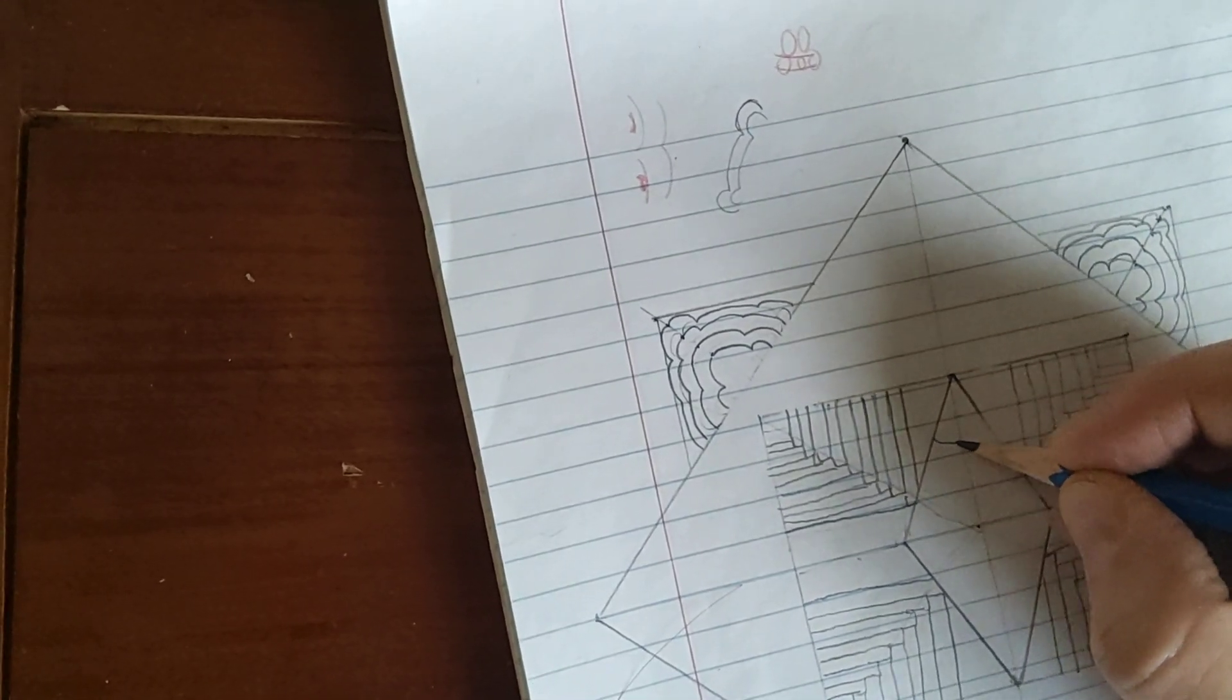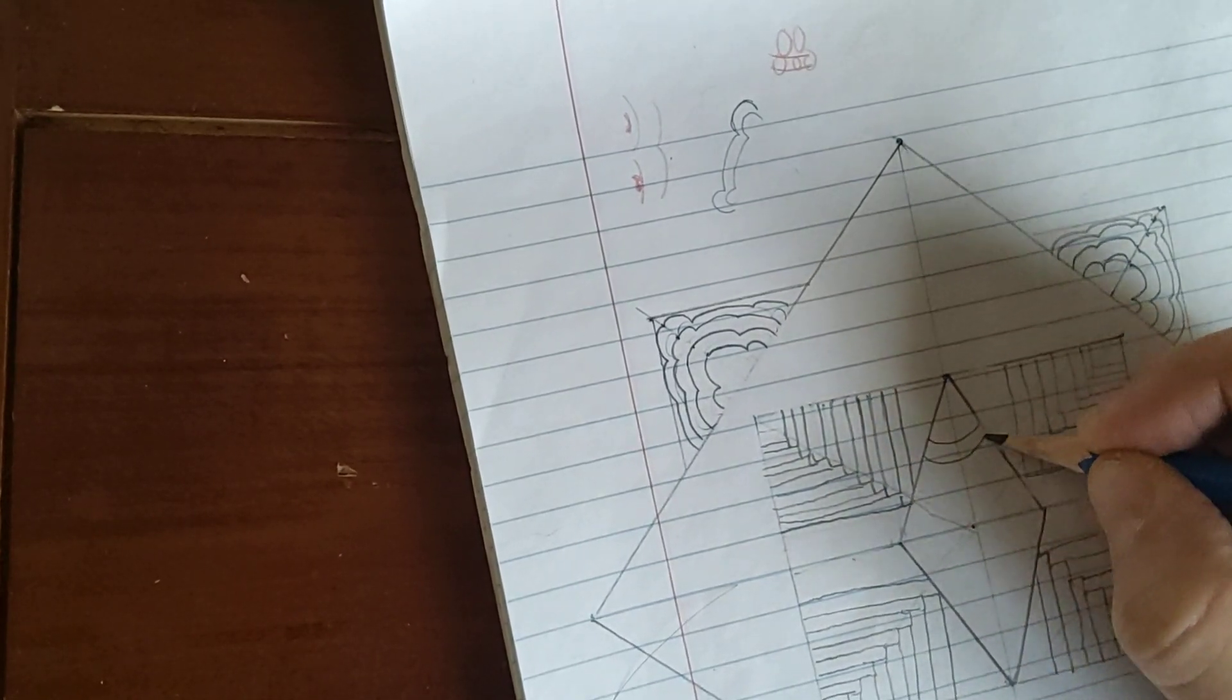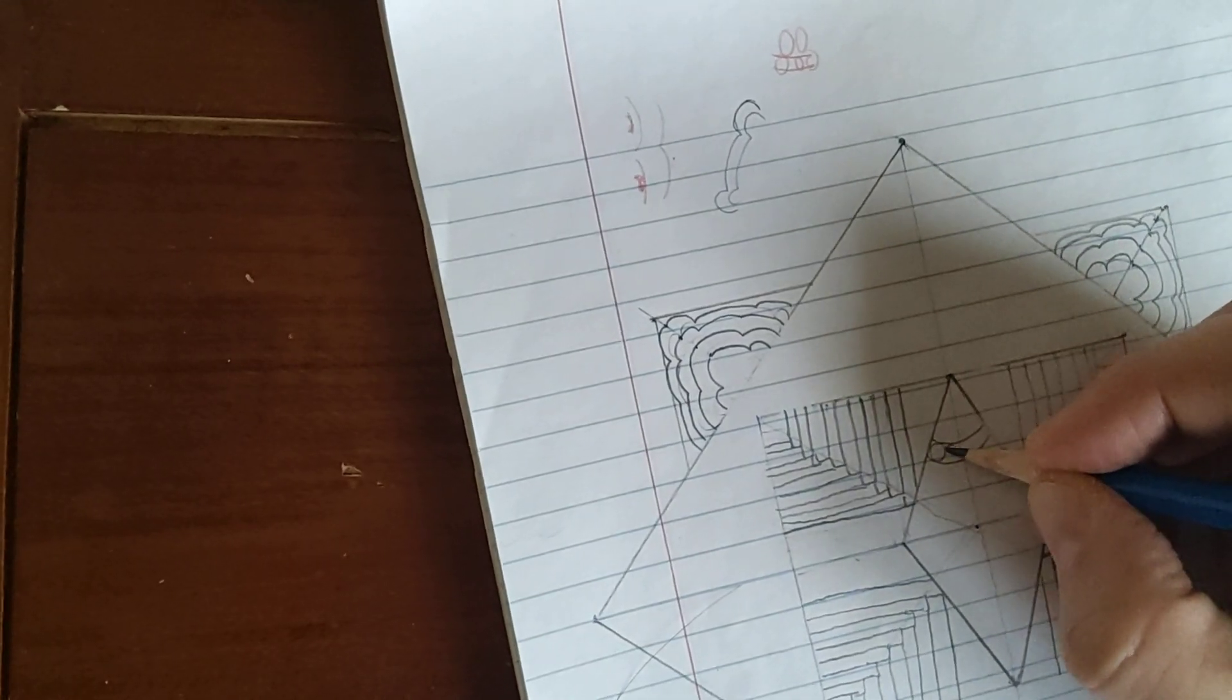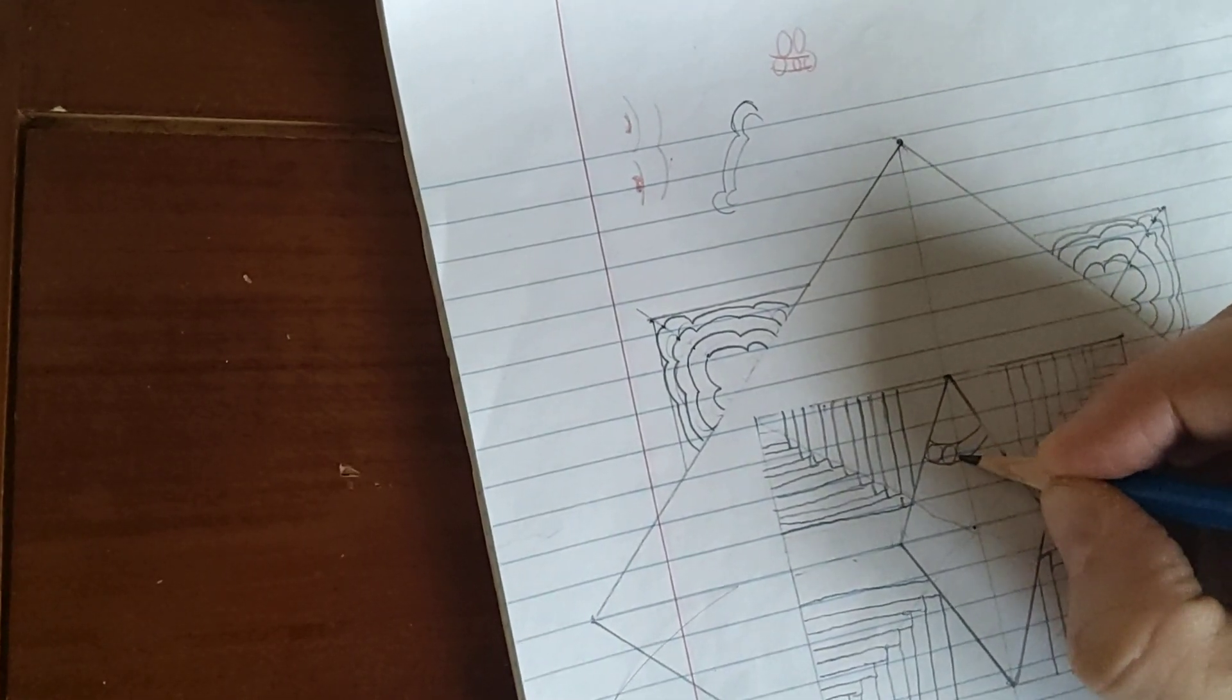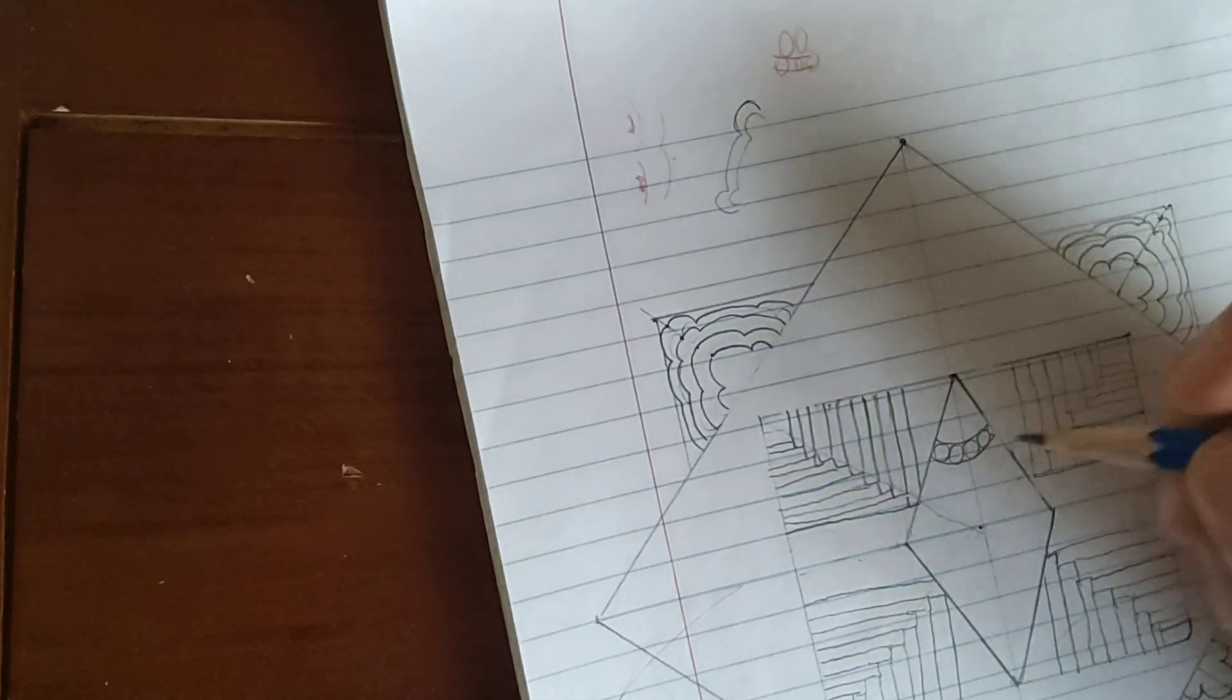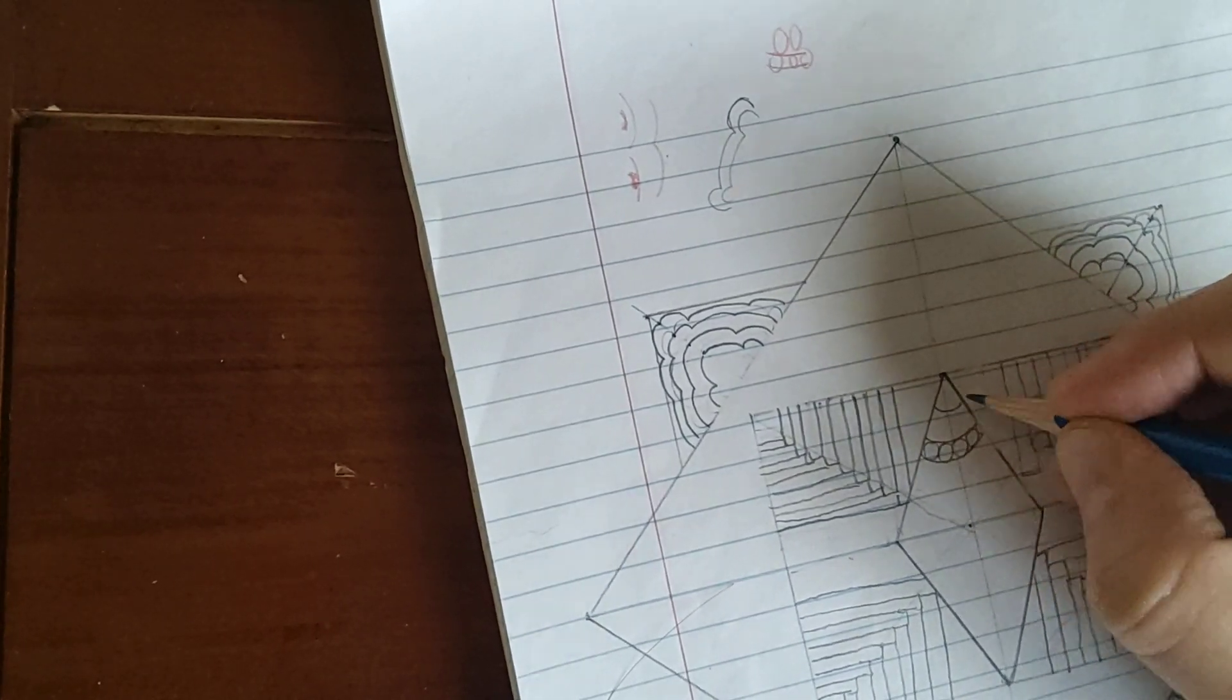So what I'm going to do is I'm going to draw a nice little curve shape like that, and then I'm going to put my little circles in there. I'm going to keep them going all the way around.